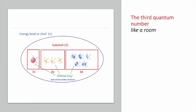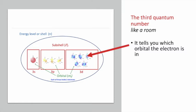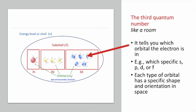The third quantum number, also known as M sub L, is like a room. It tells you which orbital the electron is in—for example, which specific S or specific P or D or F. Each type of orbital has a specific shape and orientation in space.